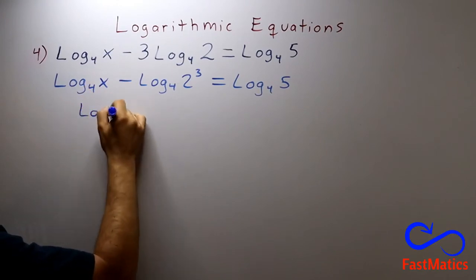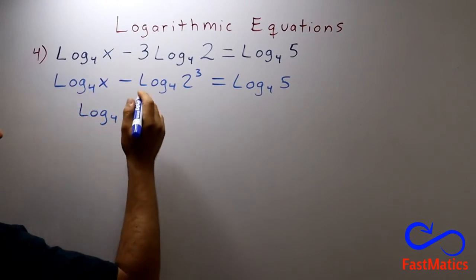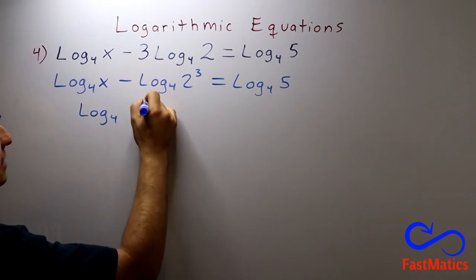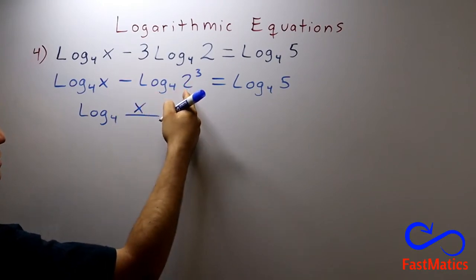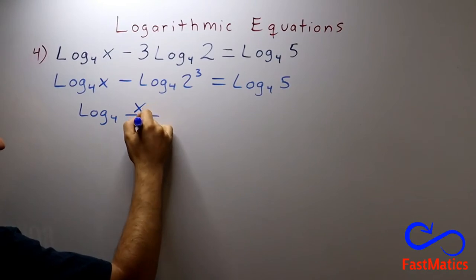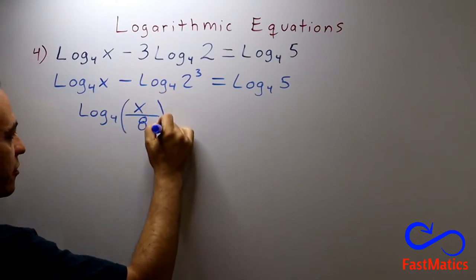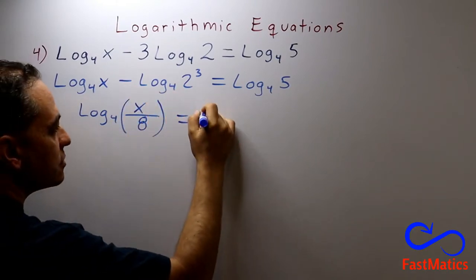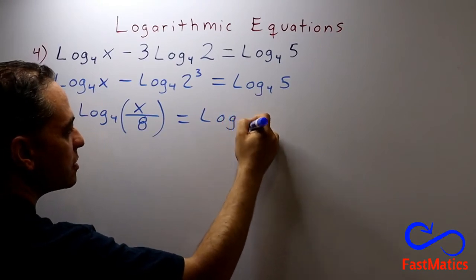...you can write logarithm base 4 of x over 2 to the power of 3 is 8. You can put parenthesis if you want and after that equal to logarithm base 4 of 5.